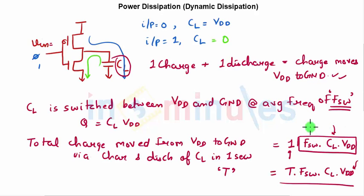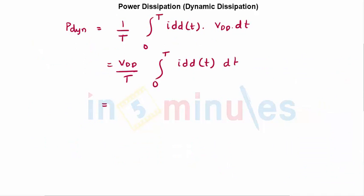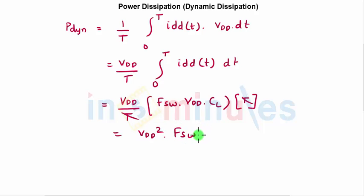Now we know that the total charge which has been transferred in one cycle from Vdd to ground was nothing but fsw (the switching frequency) times the load capacitance CL times Vdd. This is over a time period T, so this simplifies to Vdd²·fsw·CL.